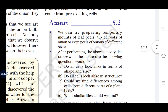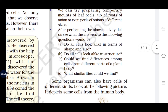We can also try preparing a temporary mount of leaf peels, chip of fruits, and onions of different sizes. After performing the above activity, let us find the answers to the following question: Do all cells look alike in terms of shape and size?